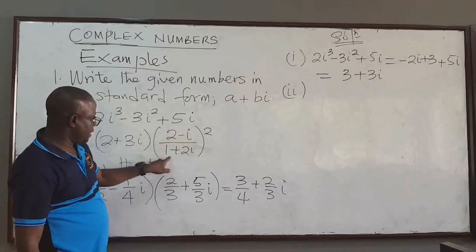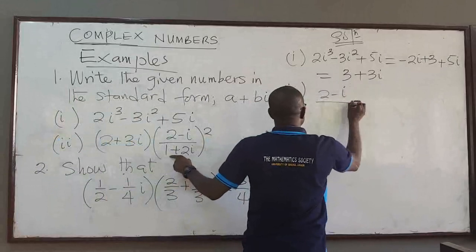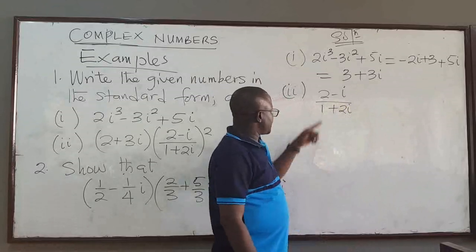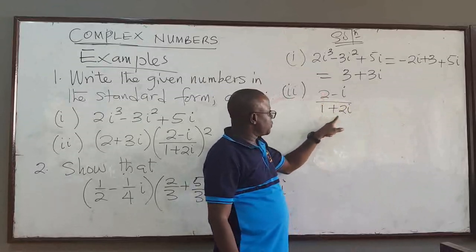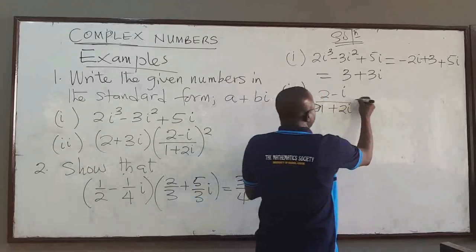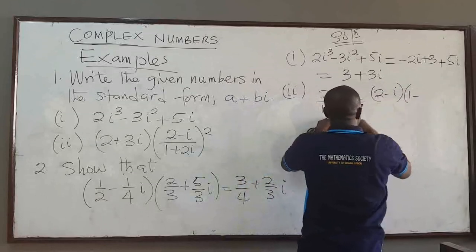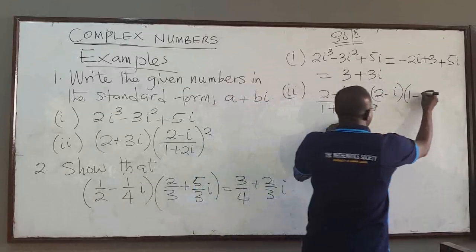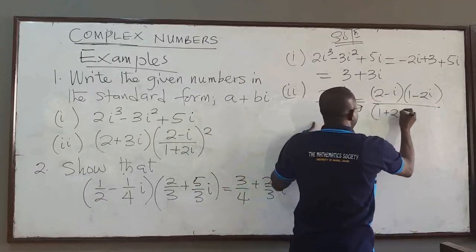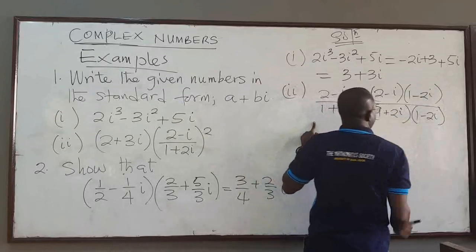So let's try to deal with what is in the bracket here. I have (2 minus i) all over (1 plus 2i). Again, when you have fractions with complex numbers, what do you try to do to simplify? Multiply the denominator by the conjugate. So I'm going to multiply the top by the conjugate: (2 minus i) multiplied by (1 minus 2i) — that's the conjugate of (1 plus 2i). And then do the same thing in the denominator: (1 plus 2i) times its conjugate (1 minus 2i).